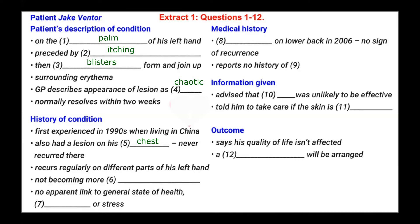The next question is: not becoming more blank. The patient says the sore on his hand comes back every year or so but never in exactly the same place. He thought it had sorted itself out, but then it came back. He says there's no pattern — it's not getting more frequent or anything. So the answer to number six is: not becoming more frequent.